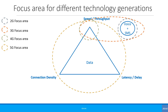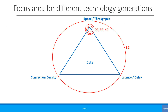What makes 5G different is that instead of focusing on just the speed aspect of data, it focuses on reducing the latency as well as increasing the connection density. To explain it simply, while 2G, 3G and 4G focused on achieving higher data speeds, 5G focuses on achieving even higher data speeds, but simultaneously reducing latency and improving connection density. To understand latency, check out our video that explains bandwidth, throughput, latency and jitter.